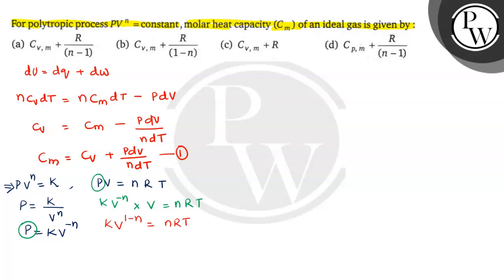On integration of this we will get k(1-n) × V^(n-1) dV = nR dT. From integration we get dV/dT = nR divided by k(1-n) × V^(n-1). This is our equation 2.